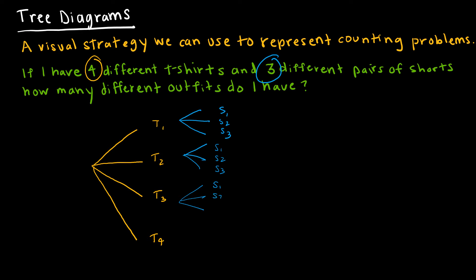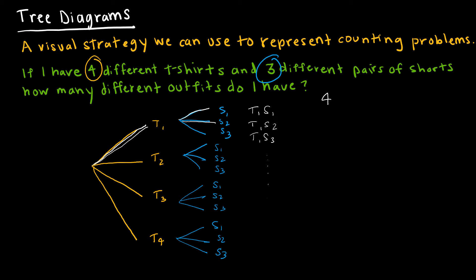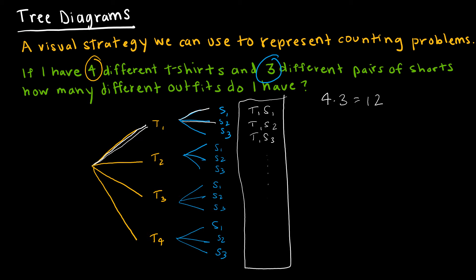It's not super helpful in this particular question because it's a fairly easy example. But the very important last step that a lot of students forget is to look at what the total outcomes are. When writing the outcome, you follow the branch — so you would follow the branch to T1, then to S1, giving you t-shirt one, shorts one. Then t-shirt one shorts two, and t-shirt one shorts three, and so on. We've already determined four times three is 12, and if I listed all of these there would be 12 different outfits.